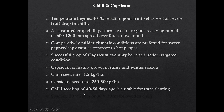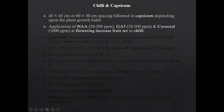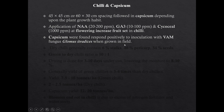Chili seedling of 40 to 50 days age is suitable for transplanting. Spacing in chili is 20x20 or 30x30 centimeters based on plant growth habit. Spacing of 45x45 or 60x30 centimeters is followed in capsicum depending upon plant growth habit. Application of NAA, GA3, and Cycocel at flowering stage increases fruit set in chili. Capsicum was found to respond positively to inoculation with VAM fungus glomus, which reduces water requirement when grown in the field.